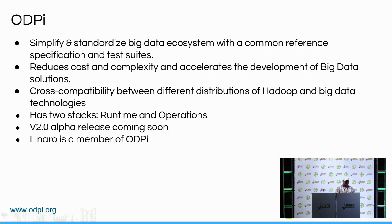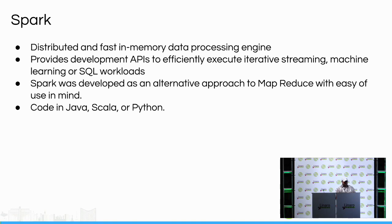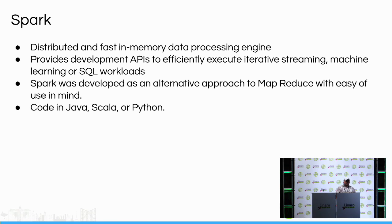For this demo, we will be using native Hadoop version 2.7, following the ODPI specifications. We'll also use Apache Spark, which is an in-memory data processing engine. It provides development APIs for SQL workloads on big data, streaming APIs, and machine learning algorithms built into it. Spark was created as an alternative for Hadoop MapReduce, because MapReduce was batch processing and pretty slow. The main goal of Apache Spark is to provide fast and interactive processing.